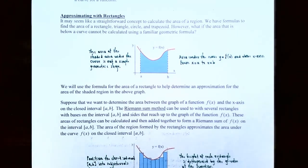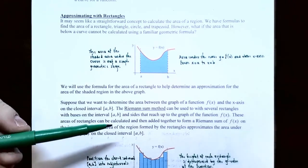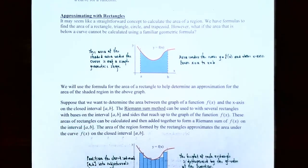However, we're going to use the formula for the area of a rectangle to help us find an approximation for the area of this shaded region that is below the curve but above the x-axis between x equals a and x equals b. Suppose we want to determine the area between the graph of y equals f of x and the x-axis on the closed interval — and it's very important that it's a closed interval — from x equals a to x equals b. The Riemann sum method can be used with several rectangles whose bases lie along the closed interval from a to b, and the sides of the rectangles reach up to the graph of y equals f of x.